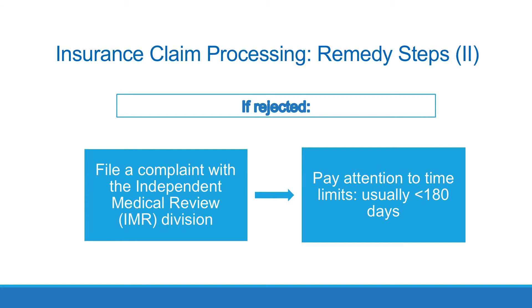Remedy step 2: If the insurer rejects your initial appeal of the denial, file a complaint with the state agency in charge of regulating insurance. Usually the agency offers an independent medical review (IMR) of insurer claim denials. Pay close attention to time limits — usually 180 days from the denial date, but sometimes shorter. The vast majority of cases sent through a state's IMR reverse insurer denials.